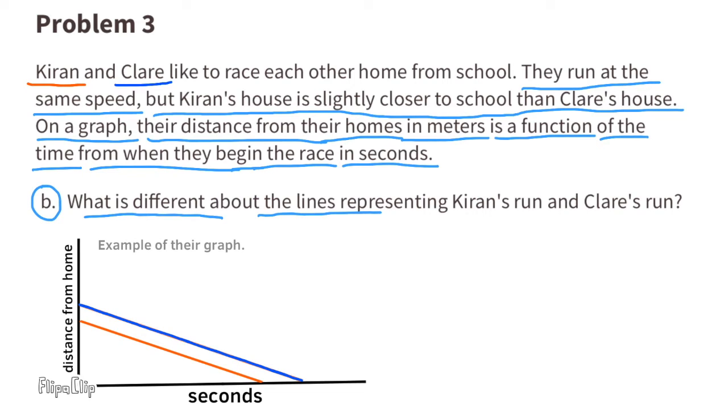What is different about the lines representing Kieran's run and Claire's run?